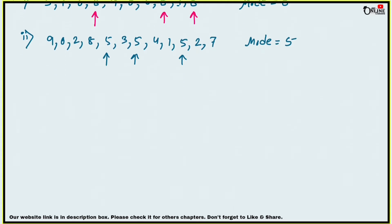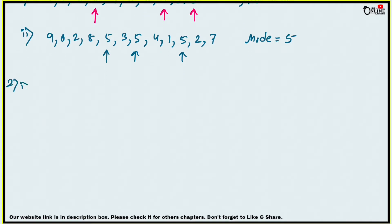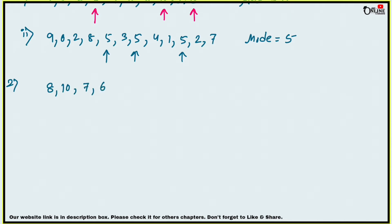Question number two: find the mean, median, and mode of the following distribution. The numbers are: 8, 10, 7, 6, 10, 11, 6, 13, 10. To find the mean, first add all the numbers.